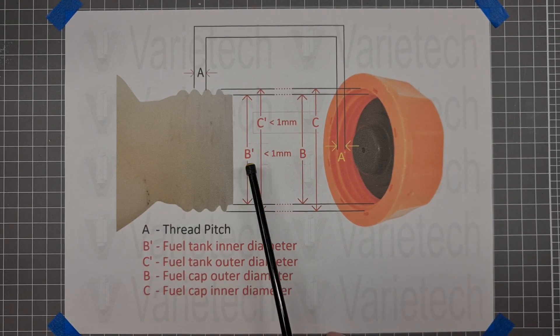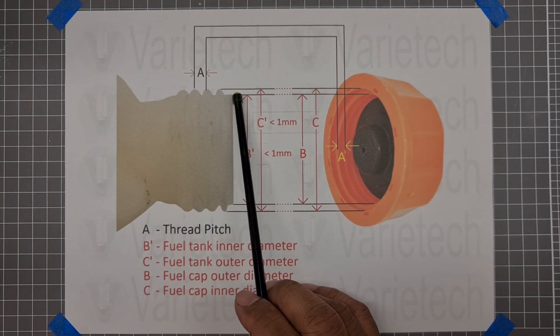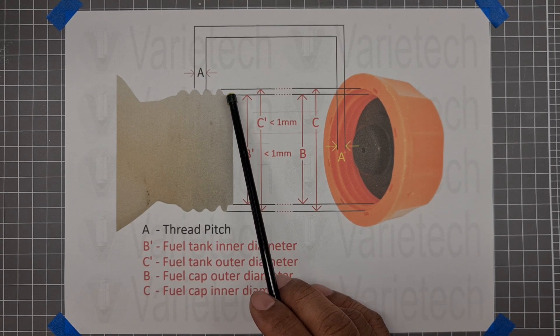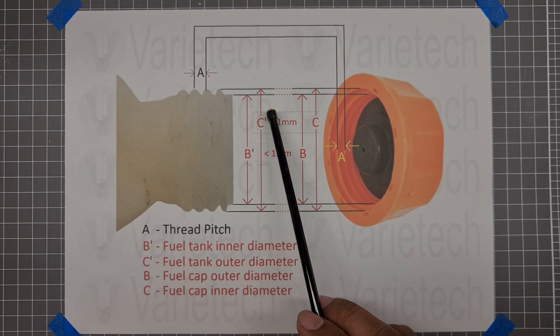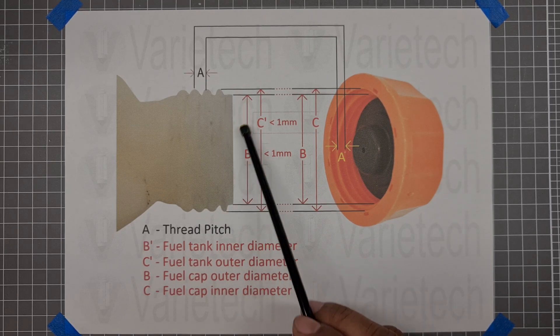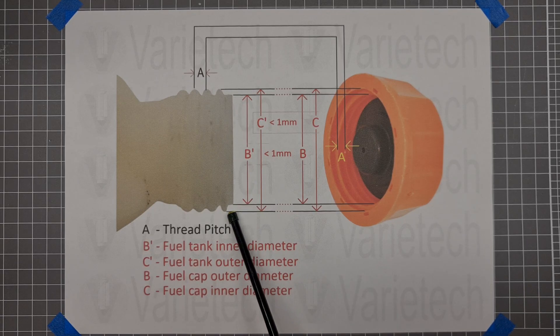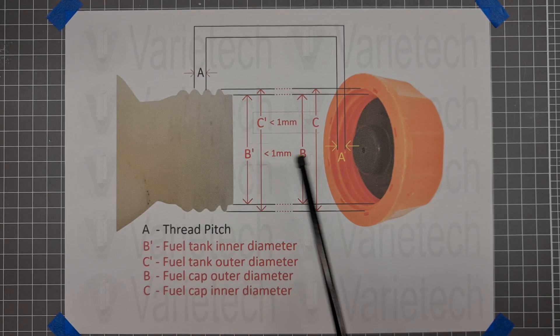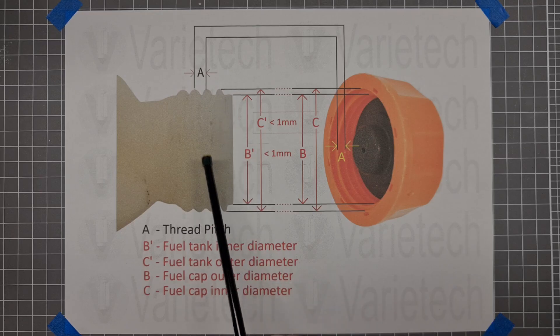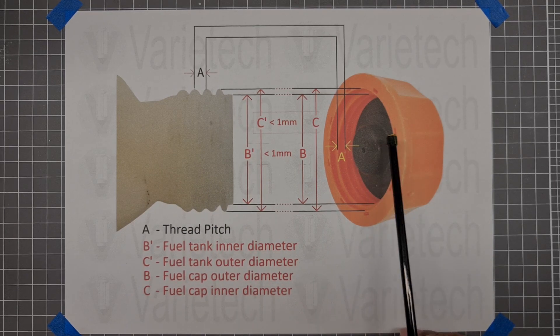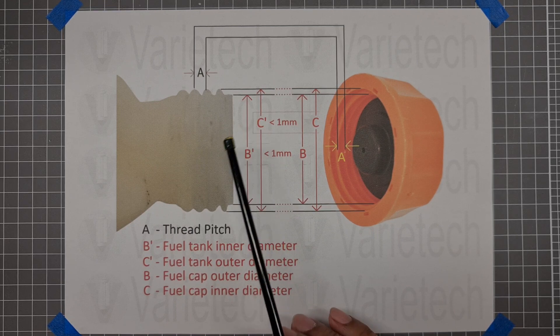The B prime is the inner diameter lip of your fuel tank. The C prime is the outside or the outer diameter from straight to straight. So this is very important for me to identify if your fuel tank will fit on the fuel cap.